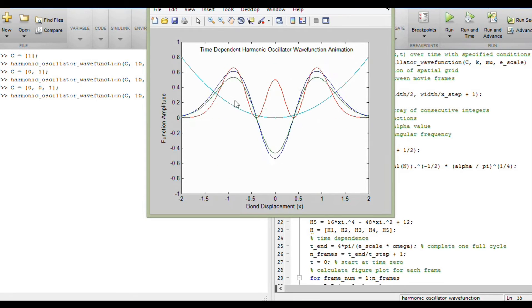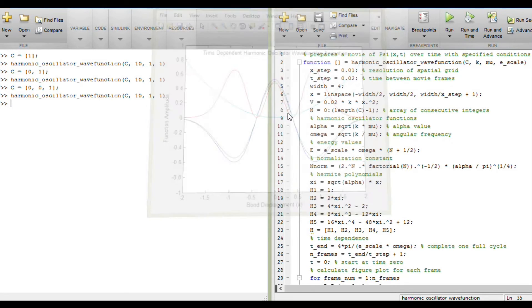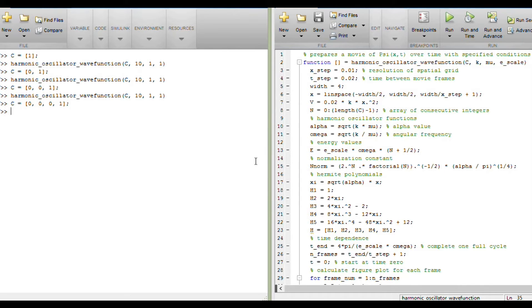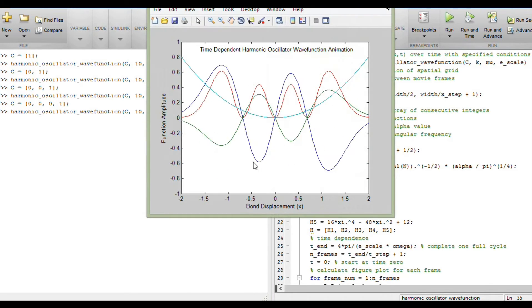And notice again that the oscillations in time are going back and forth faster now at the higher energy. Going to n equals 3, the fourth state. We have four peaks, again, exaggerating this trend of larger peaks on the outside, smaller peaks in the middle. And these are still getting faster yet. The particle is moving even further away from the bottom of the well.